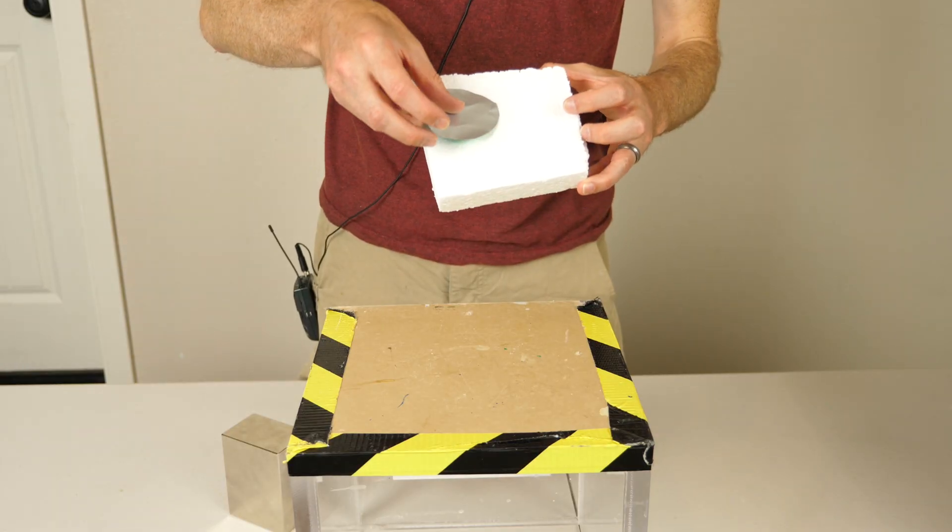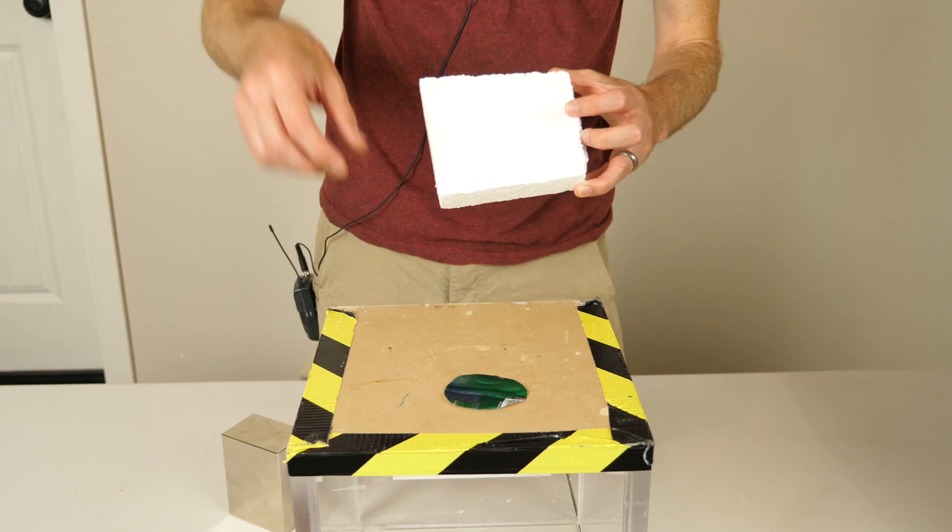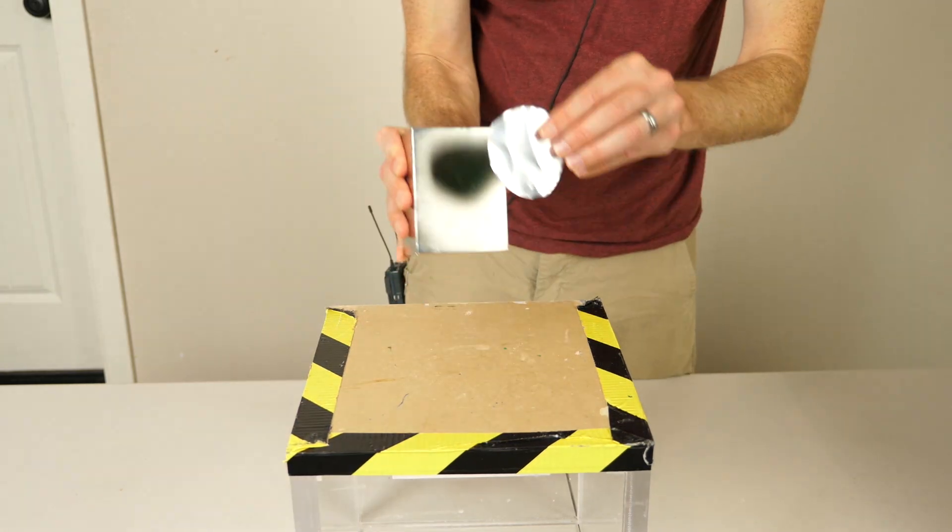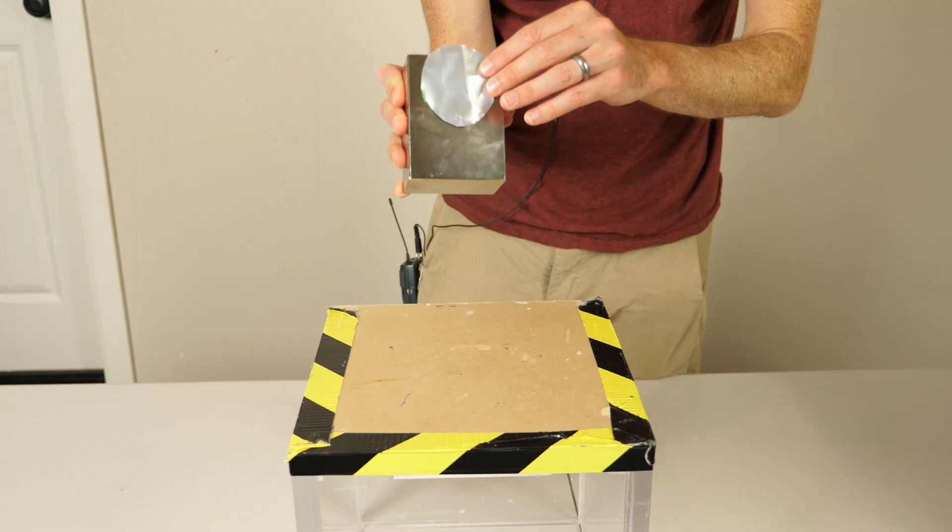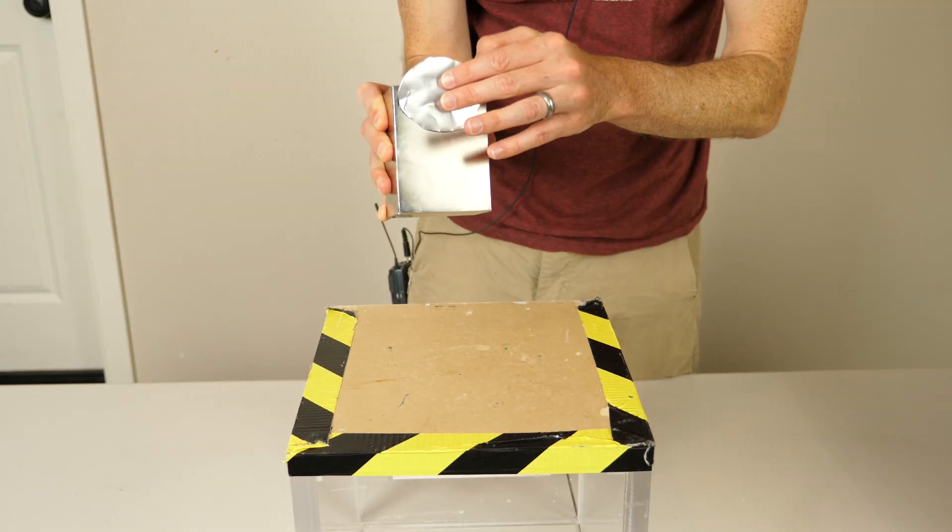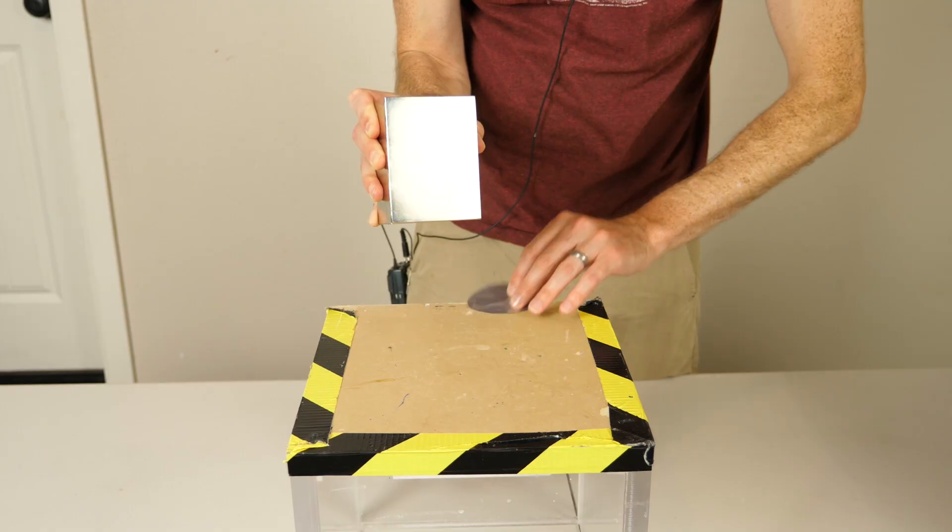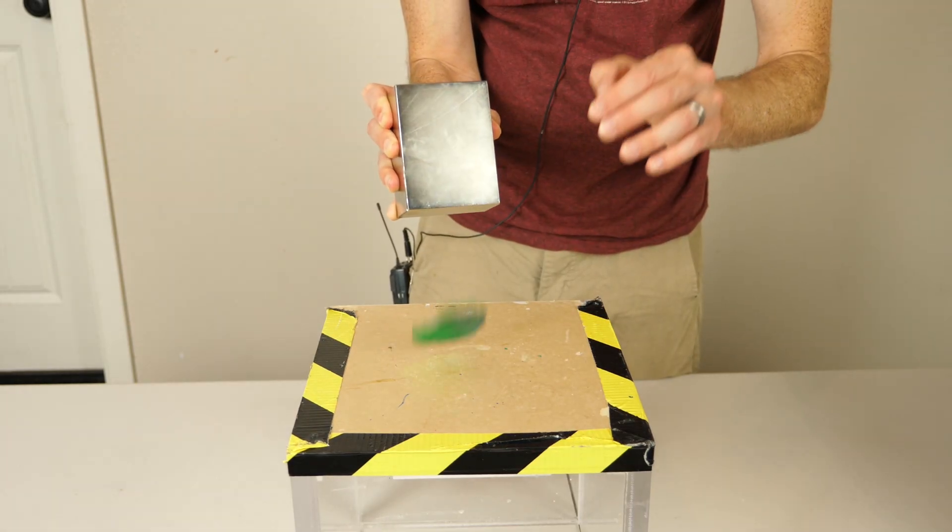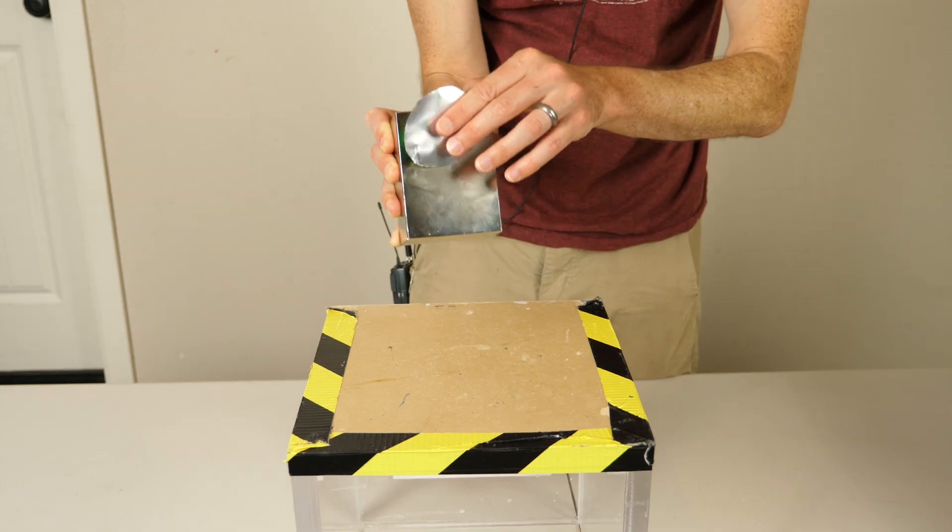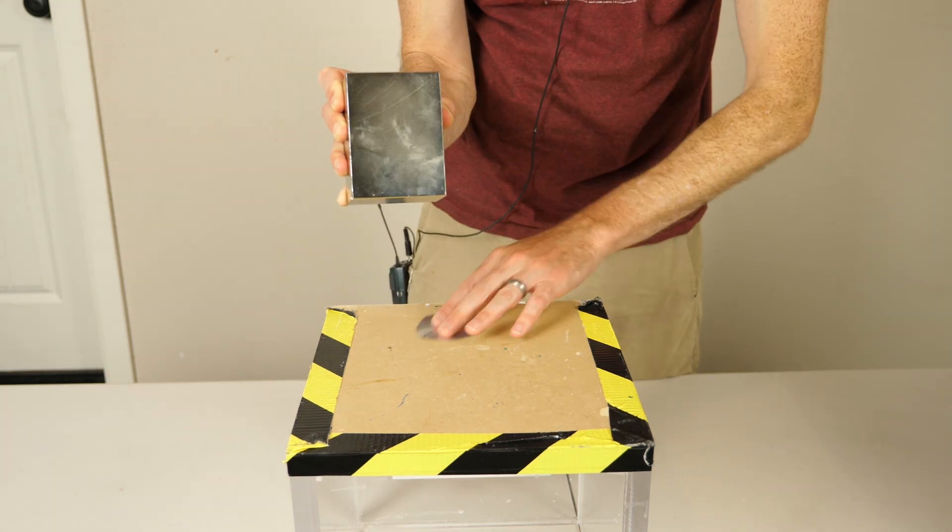And just for reference, this is what it looks like when it slides off something. Pretty predictable, right? But watch what happens when I try to slide it off this magnet. It's almost as though it sticks to the corners. It doesn't want to move fast past them. It's pretty cool.